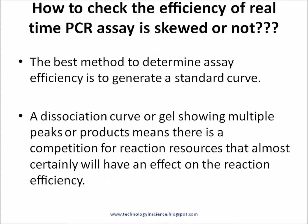The best method to determine if assay efficiency is skewed is to generate a standard curve of template diluted over the range that will be encountered with unknown samples, and look at the efficiency over that range — it should be as close to 100% as possible. A dissociation curve or gel showing multiple peaks or products means there is competition for reaction resources, which will almost certainly affect reaction efficiency.